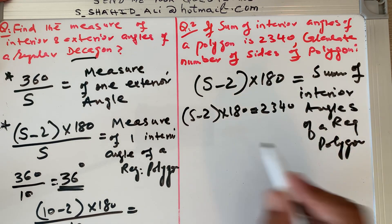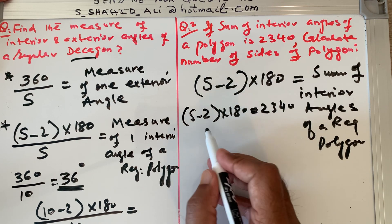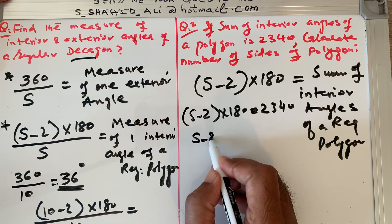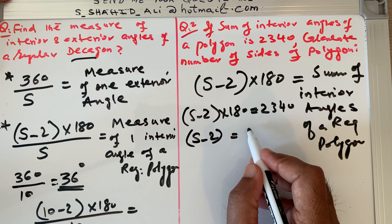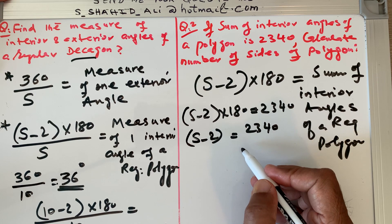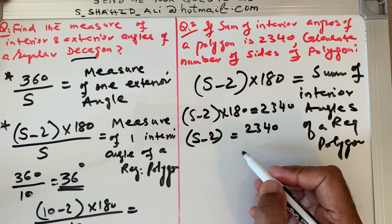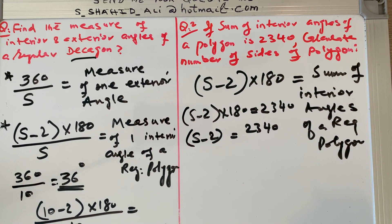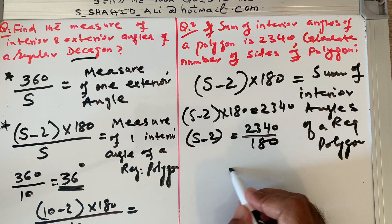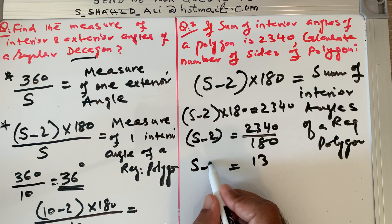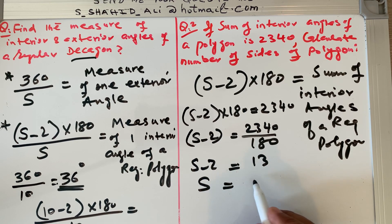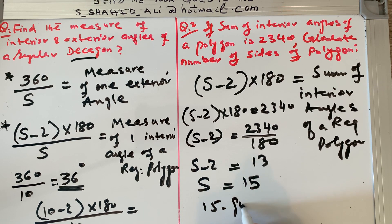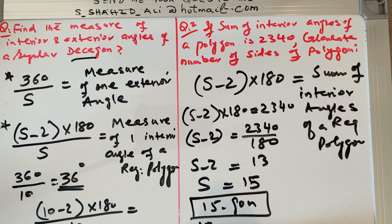We shift 180 to the other side of the equation, so we divide both sides by 180. Then s minus 2 equals 2340 divided by 180, which is 13. So s minus 2 equals 13, which means s equals 13 plus 2, giving s equals 15. The polygon has 15 sides.